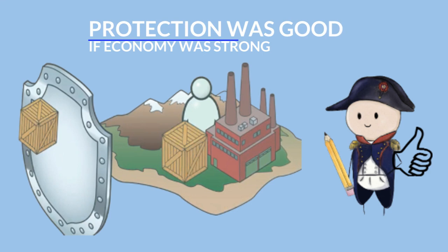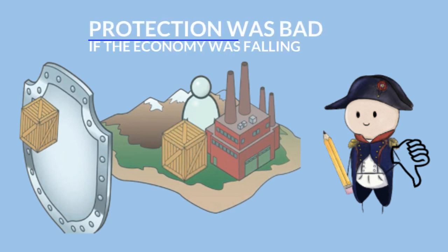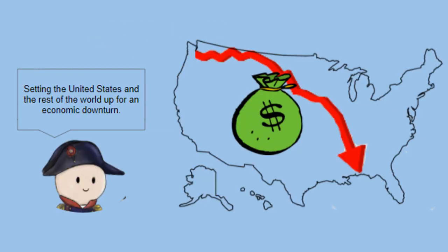In the 1920s there was a lot of protectionism going on. Many countries were trying to protect their domestic market and become strong again after the war. This was really good if your economy was constantly growing, like it was in the United States in the early 20s. However, if there was a downturn in your economy, there would be no place for your goods to be sold, and your economy would continue to spiral down even farther. The practice of protectionism was setting up countries for a big economic downturn.